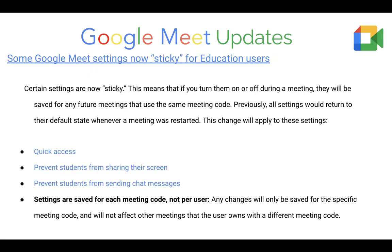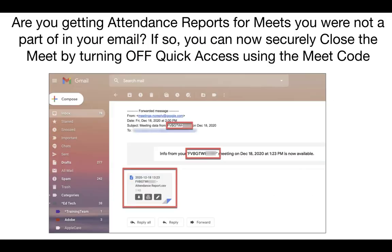Once you change those settings inside of Meet, they are saved for all future meetings using that same code. Why is this important? Are you getting attendance reports for meets that you are not a part of in your email? If so, you can now securely close the meet by turning off quick access using the meet code.